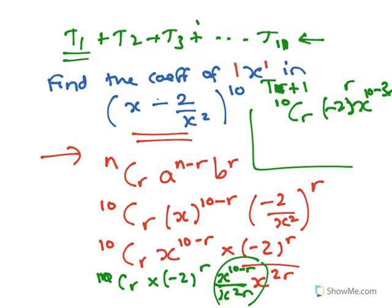So when you do this, this indice here, the 10 minus 3r, if I want to get a coefficient of x to the 1, that has to equal 1. So if you solve that, minus 3r will equal minus 9.